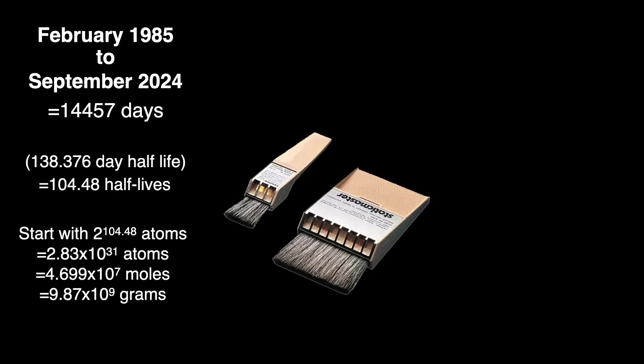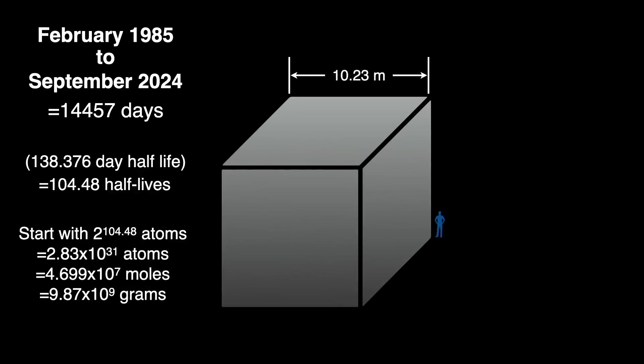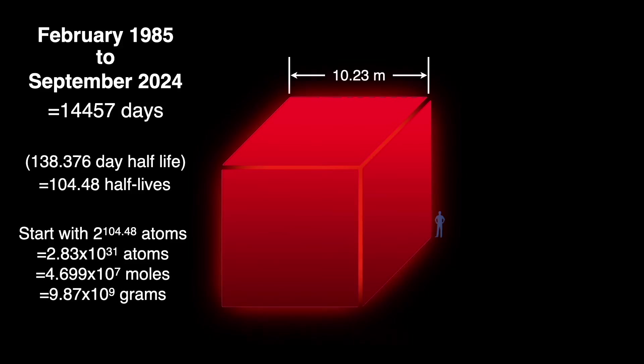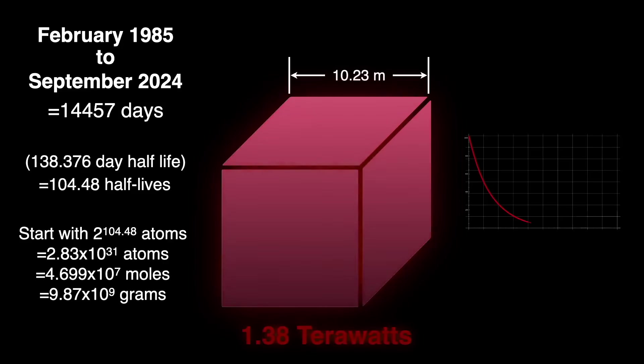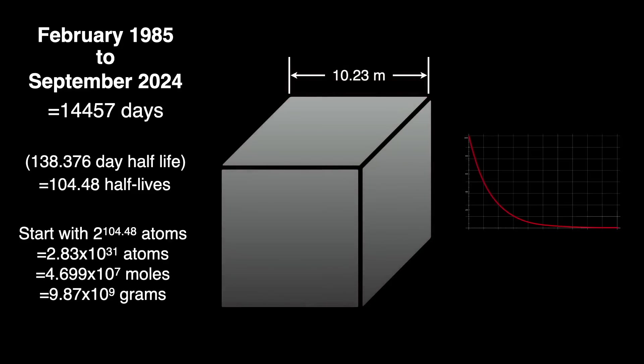That much polonium would be a block, 10.23 meters on a side. Can you imagine how hot that would be, giving off 1.38 trillion watts, or 1.38 terawatts of heat? The entire world only produces about 2.4 times that energy. Of course, that's the energy at the beginning, which would exponentially decay to nothing from 1985 to today. Aren't calculations fun?